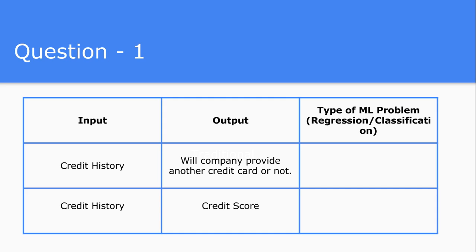So let's try to understand where these problems lie. In both questions we have been given the credit history — the amount of transactions and everything the individual person does. But whether the problem is regression or classification depends on the output — the way you define the output of the system. For the first question, whether the company will provide another credit card or not is a kind of binary decision, so the output will be a discrete step — either it provides it or not.